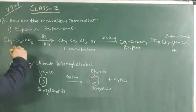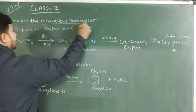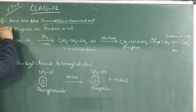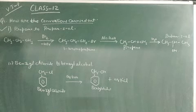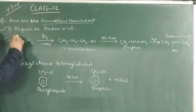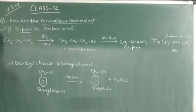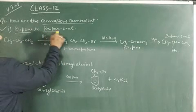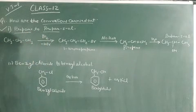The question is: how are the conversions carried out for the following? The first one is propane to propanol. That means you have to convert an alkane group to an alcoholic group. The number of carbons should remain the same.